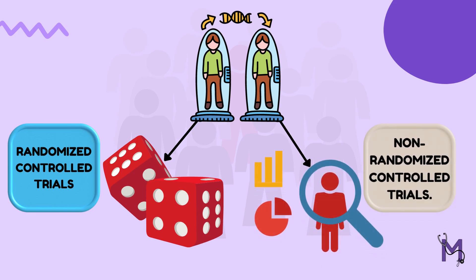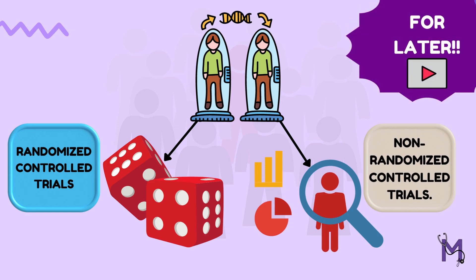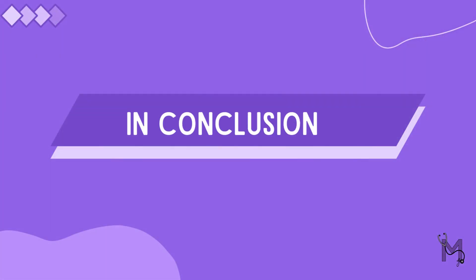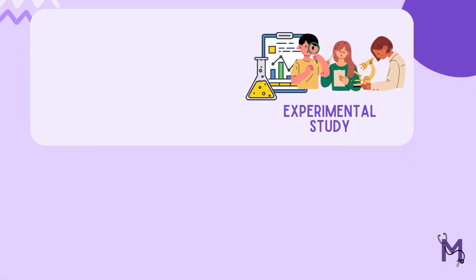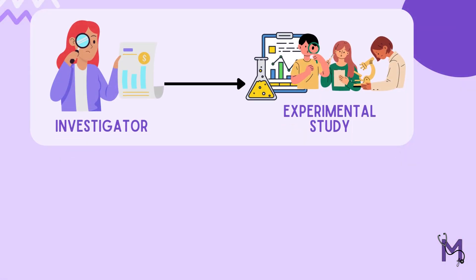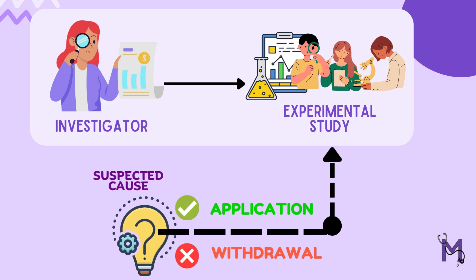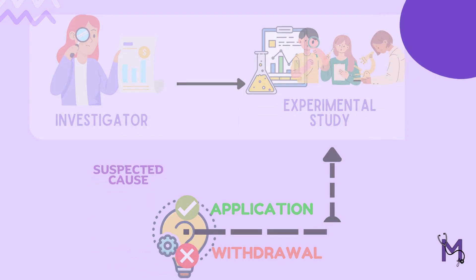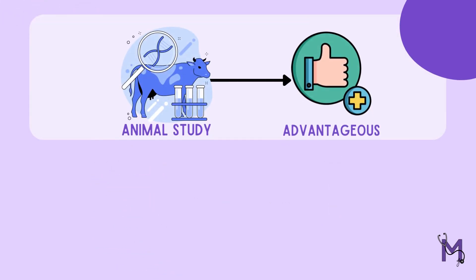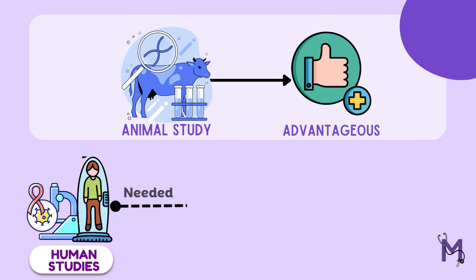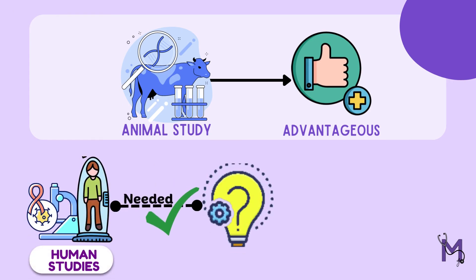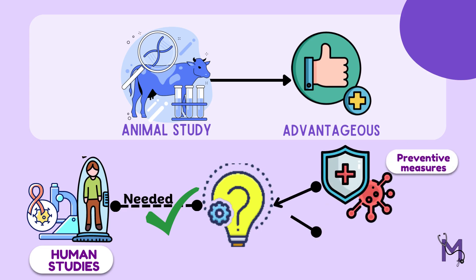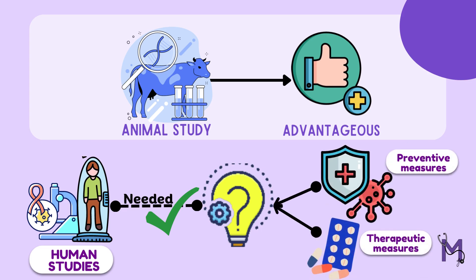In conclusion, experimental studies are studies directly done by the investigator and involve the withdrawal or application of a suspected cause. Although animal studies have their advantages, human studies will always be needed for the accurate identification of the cause and then to plan out proper preventive and therapeutic measures.